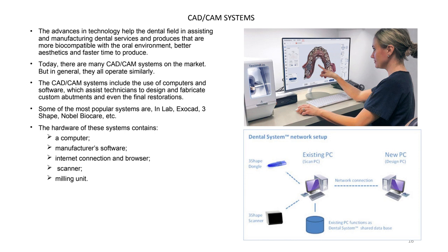For CAD-CAM we need a computer, the software, an internet connection and browser, a scanner, and a milling unit or 3D printer. There are different types of hardware system combinations available.